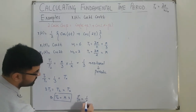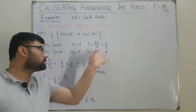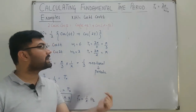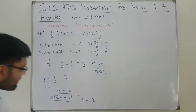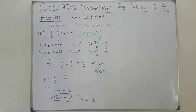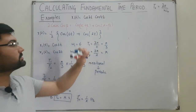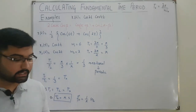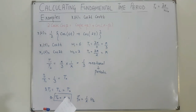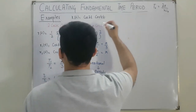Remember: earlier I said that if a ratio includes π it may be irrational and thus aperiodic. But here π is the actual period in seconds — it is not part of the ratio. The ratio was 1/3, which is rational. So this signal is periodic with period π seconds.